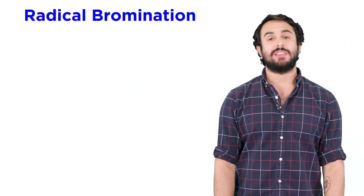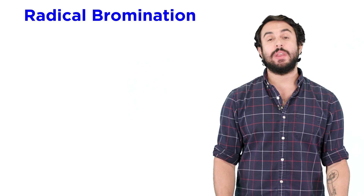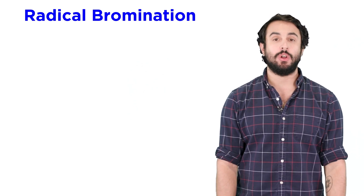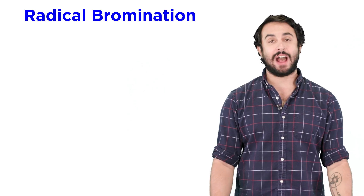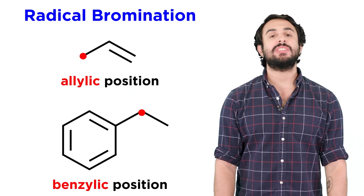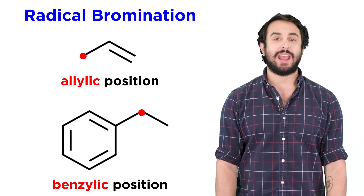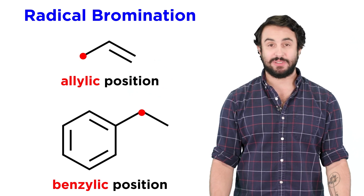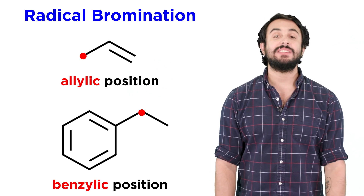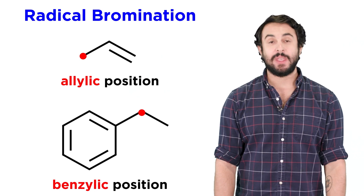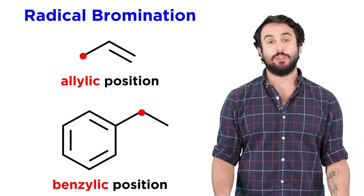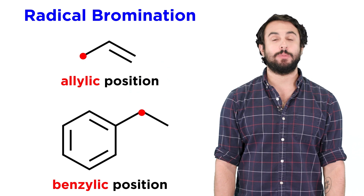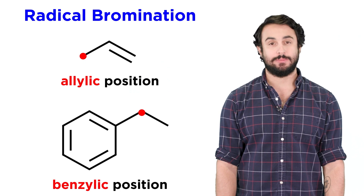There is another context in which we can brominate at a particular location on a molecule other than an alkane. This can be referred to as bromination at the allylic or benzylic position. Let's take a look at what these positions are, how the reaction works, and precisely what type of reagent will promote this reaction.